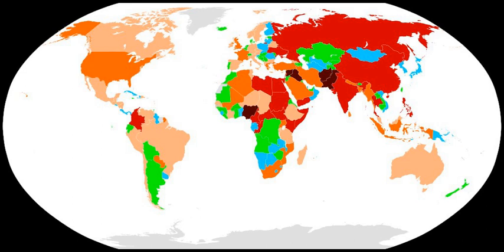The GTI score for a country in a given year is based on a unique scoring system to account for the relative impact of incidents in the year. There are four factors counted in each country's yearly score: total number of terrorist incidents in a given year, total number of fatalities caused by terrorism in a given year, total number of injuries caused by terrorism in a given year, and the approximate level of total property damage from terrorist incidents in a given year. Each of the factors is weighted differently and a five-year weighted average is applied to reflect the lingering psychological effect of terrorist acts over time. The weightings were determined by consultation with the GPI expert panel.